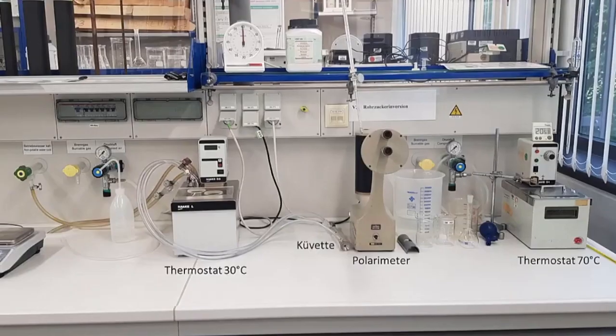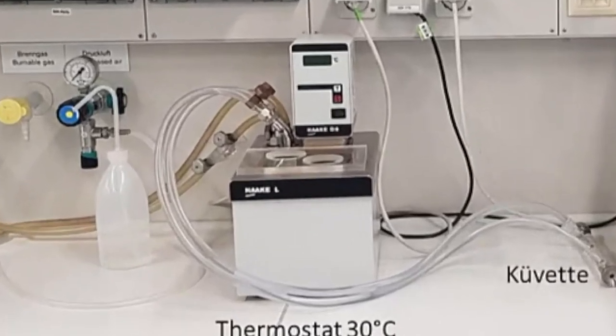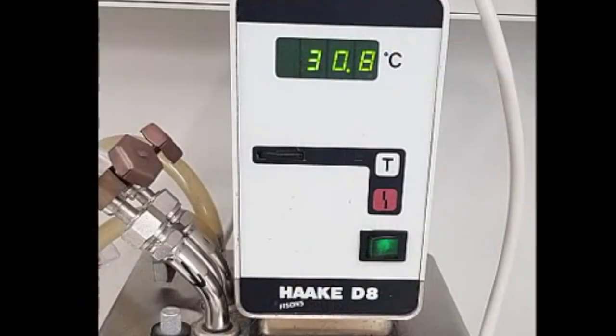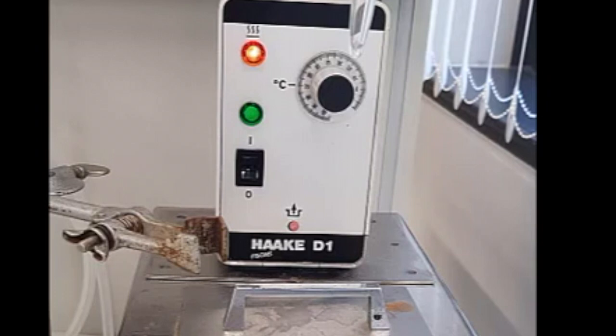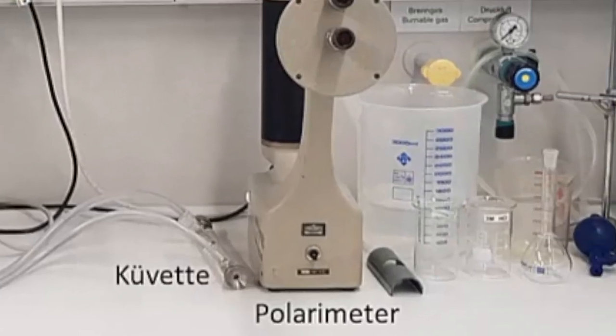Here is the setup of the experiment. Two thermostats, one set to 30 degrees Celsius for the actual kinetic measurement in the polarimeter, and one set to 70 degrees Celsius to complete the reaction, a glass cuvette and the polarimeter.